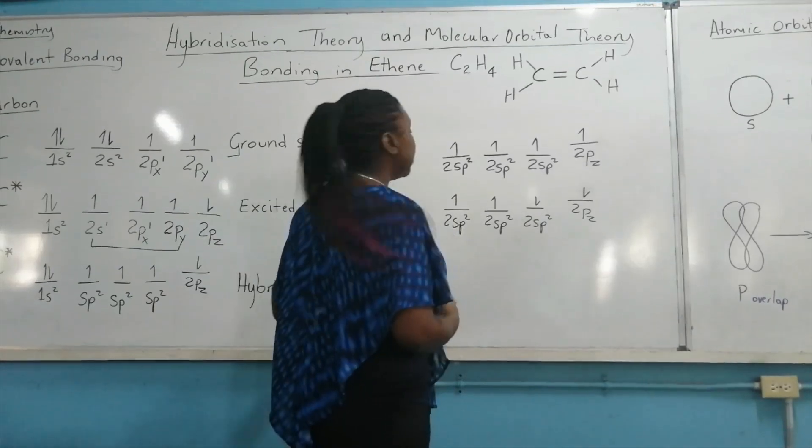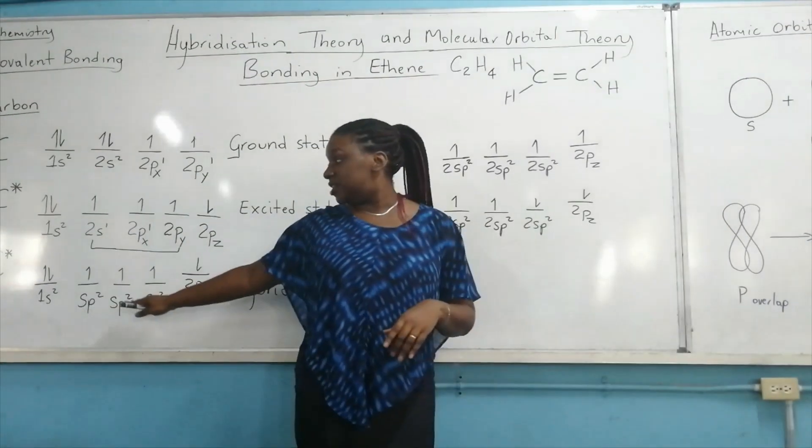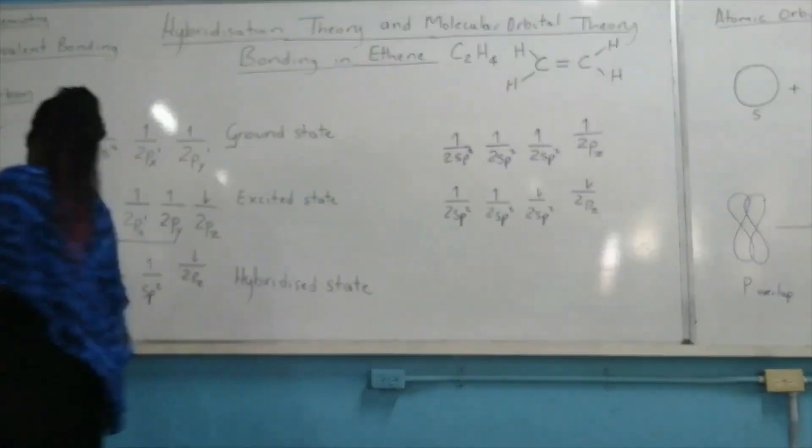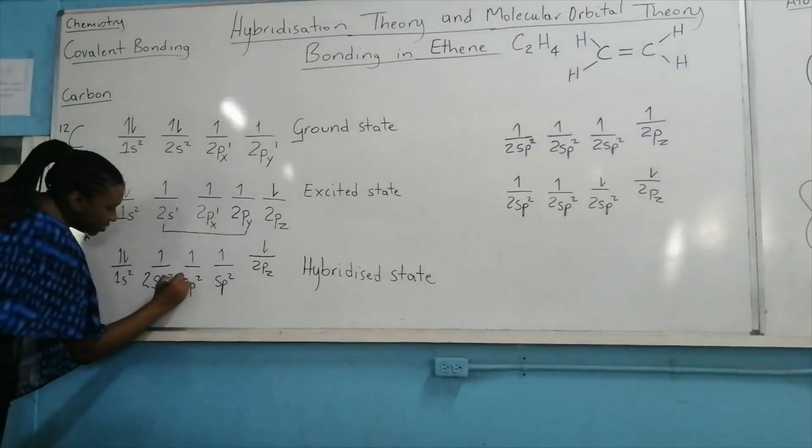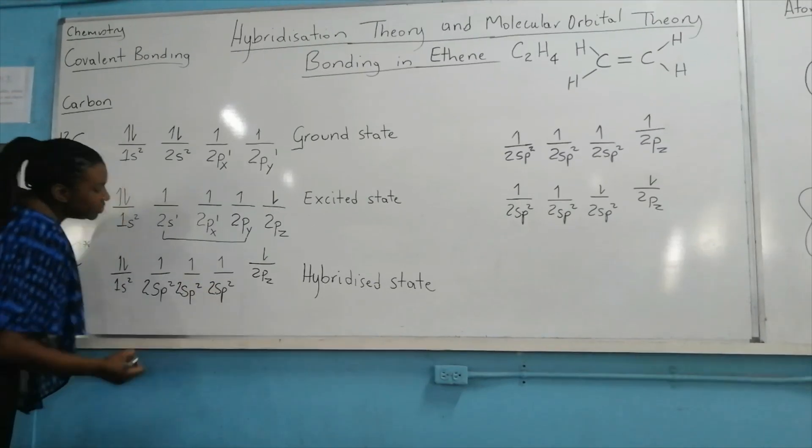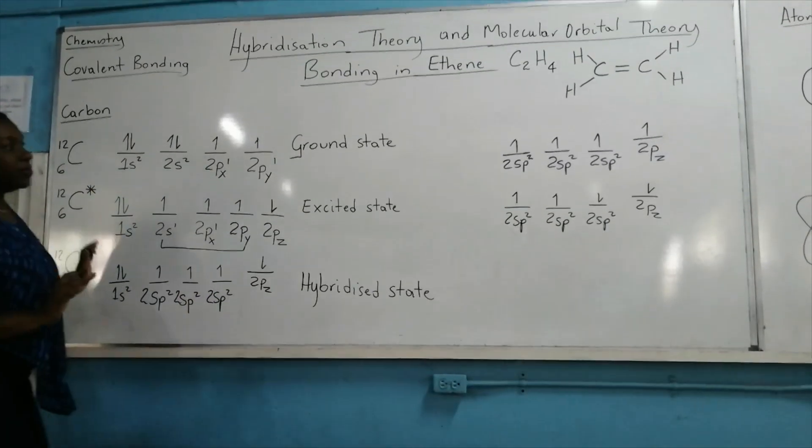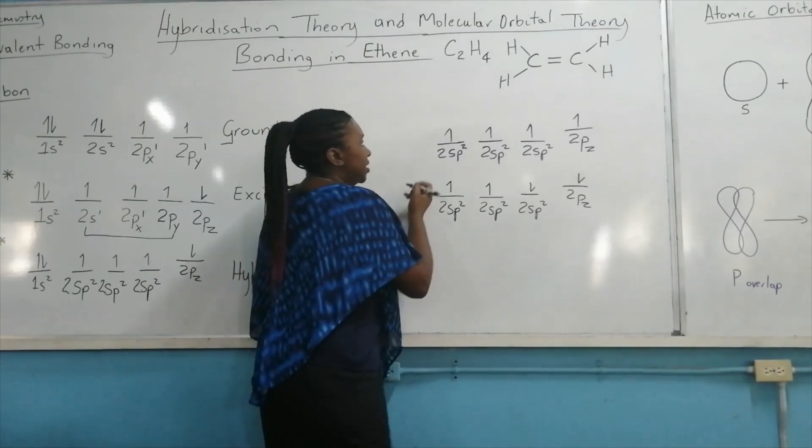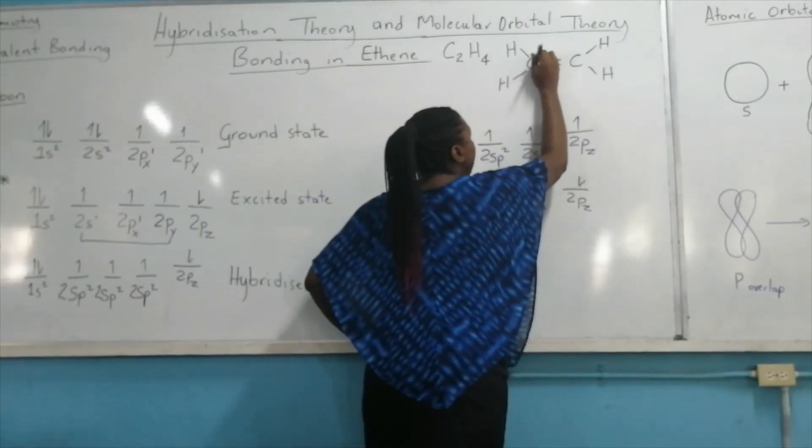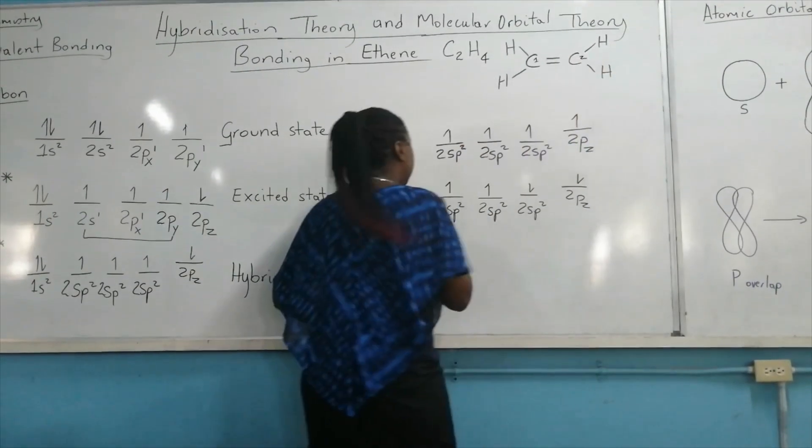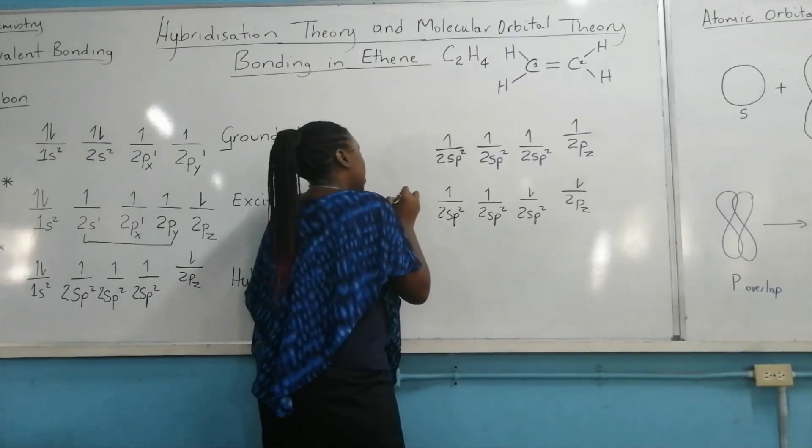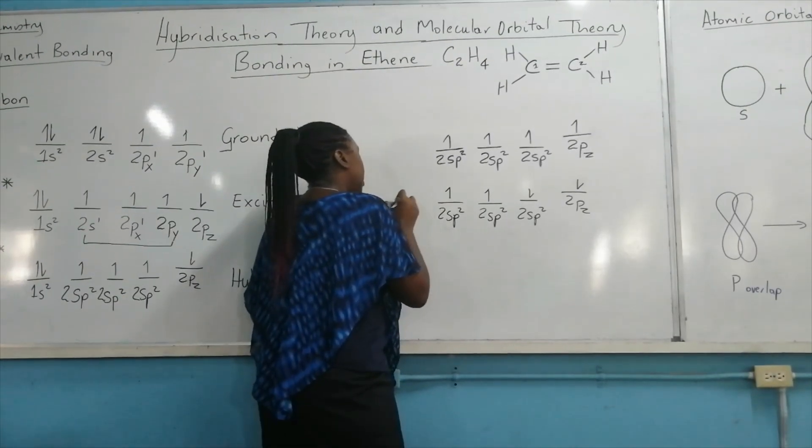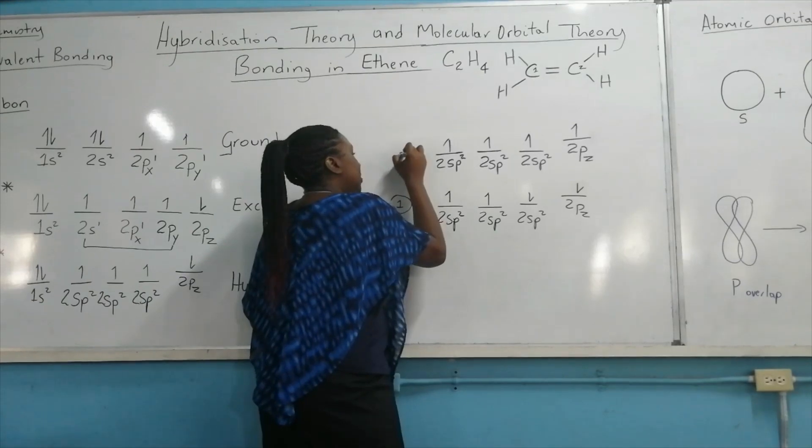But I looked over there and I realized that I left off the second energy level before the sp². So we just put them in right now, so 2sp², 2sp², 2sp². All right. So we're good now. This is for one carbon atom involved in the bond. This is for carbon atom number one and this is for two. So this is carbon number one and this is for carbon number two.